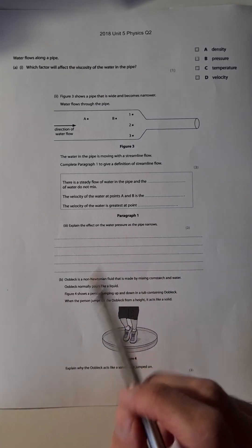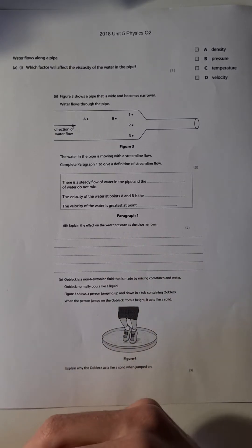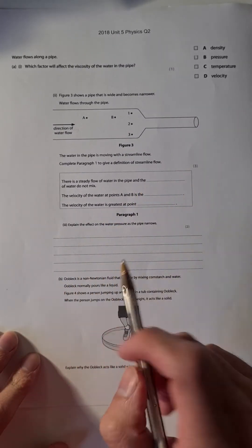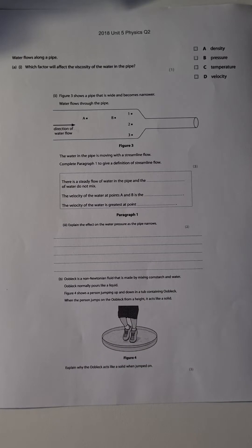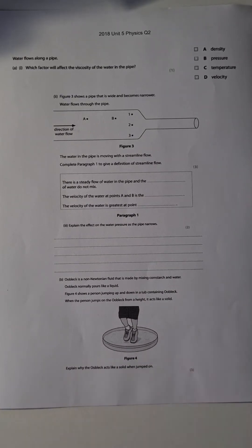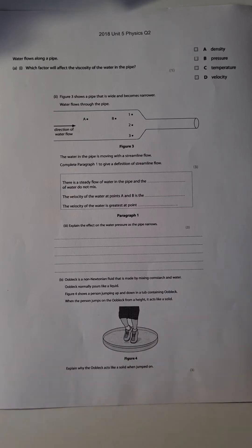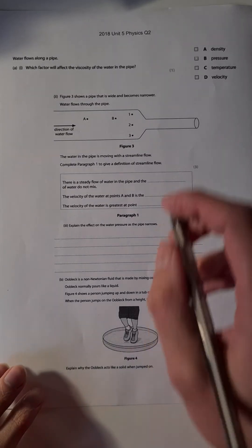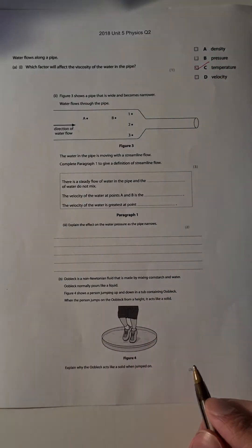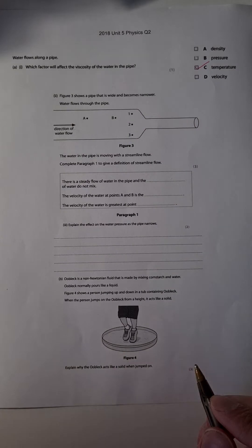Okay, this is 2018 Unit 5 Physics Question 2. The paper is attached below in the info section, or you can pause the video and give the questions a go. I'm about to go through the answers. So water flows along a pipe - which factor will affect the viscosity of the water in the pipe? This is the one that's going to break those intermolecular forces a little bit, and that's the temperature. Temperature is going to change it.